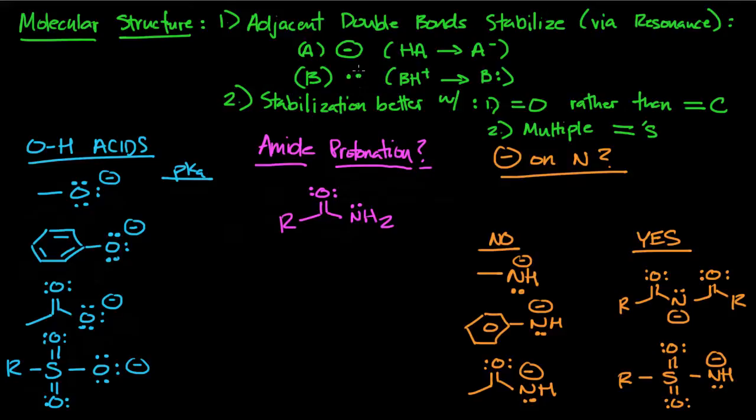Now, when it comes to double bonds, the stabilization is going to be better if the double bond is attached to an oxygen rather than a carbon, and that makes sense because oxygen is pretty electronegative, good at stabilizing negative charge. And number two, the thing to keep in mind is if you have multiple double bonds, that'll be better than just a single double bond.